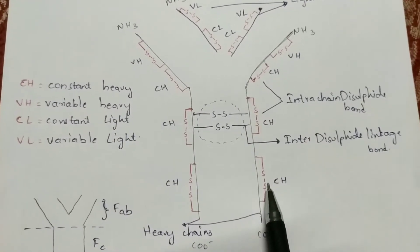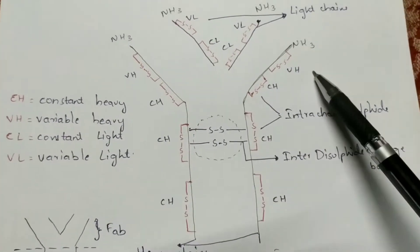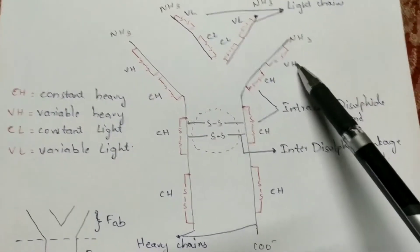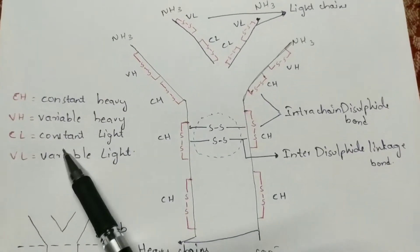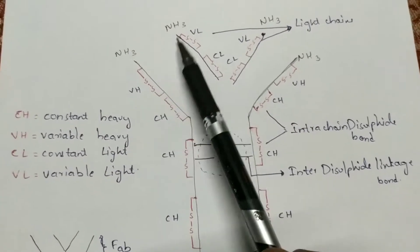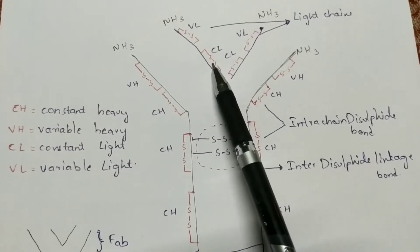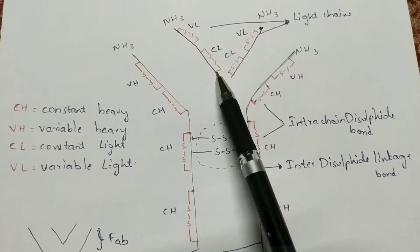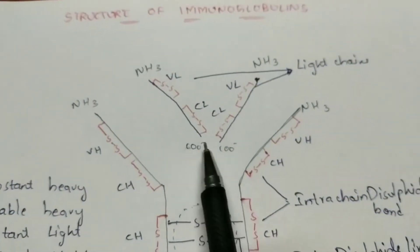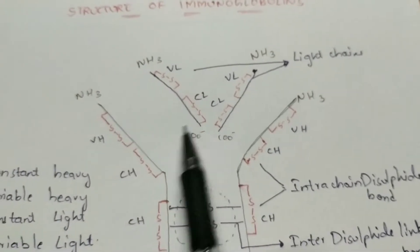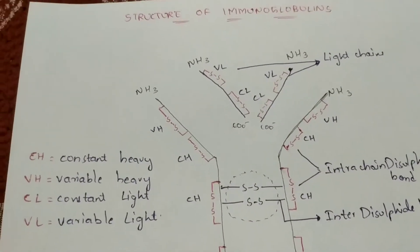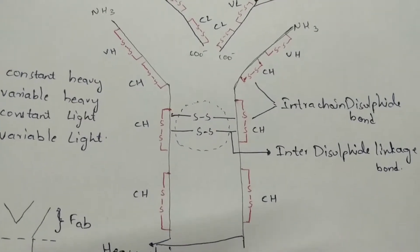The disulfide linkage bonds exposed towards the carboxyl group are called constant heavy chain (CH). Variable heavy (VH) refers to disulfide linkage bonds exposed towards the amino group. Similarly, constant light (CL) refers to bonds exposed towards the carboxyl end, and variable light (VL) bonds are those exposed towards the amino end.